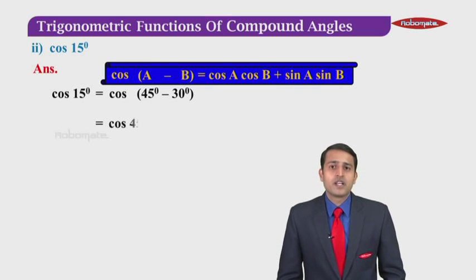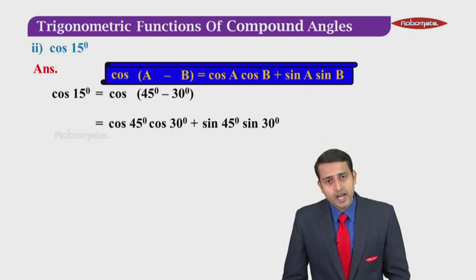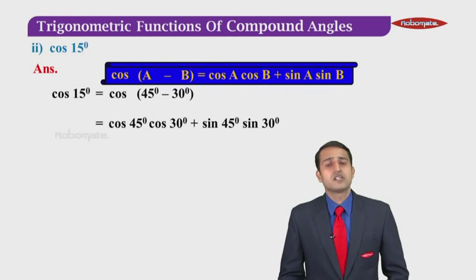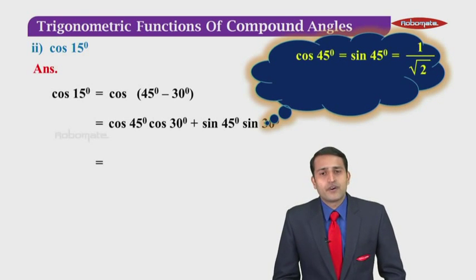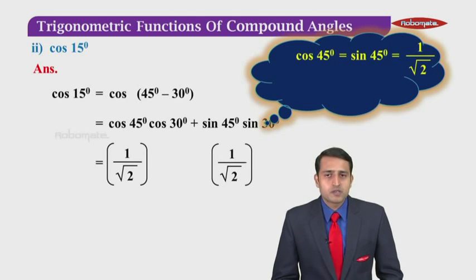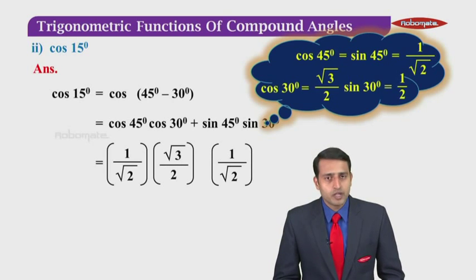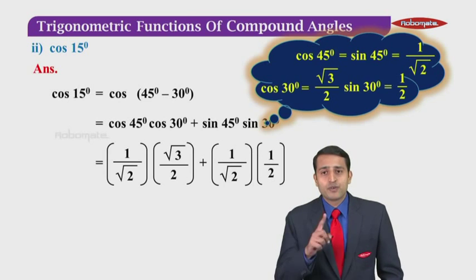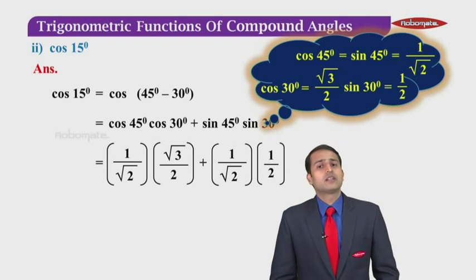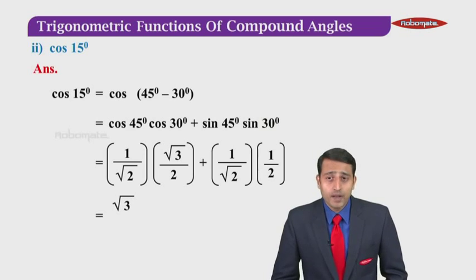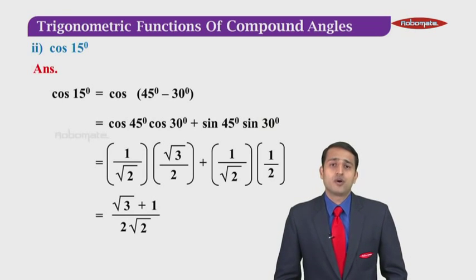Substituting the values — cos 45° = sin 45° = 1/√2, cos 30° = √3/2, sin 30° = 1/2 — we get (1/√2)(√3/2) plus (1/√2)(1/2). Again, the denominator is 2√2, so we can combine: the numerator becomes √3 + 1 and the denominator is 2√2. So cos 15° = (√3 + 1) / (2√2).